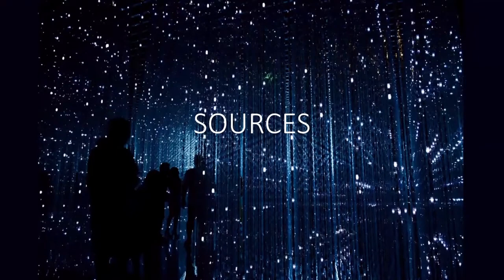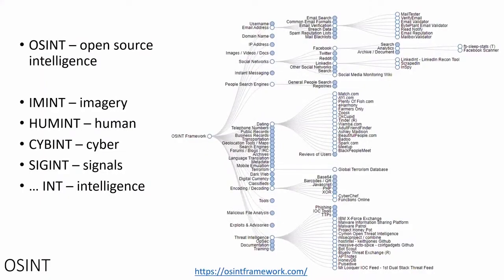I'm going to talk about open source intelligence. When it comes to sources in intelligence, you can have very different ones. In this presentation I'm mostly going to talk about OSINT — open source intelligence. But you can also have imagery intelligence, which in some cases may overlap with open source intelligence. If you get an image from an open source, it can be analyzed in both areas, and sometimes this poses questions, especially if you have separate teams working on different types of intelligence.